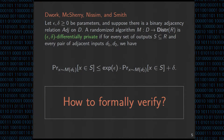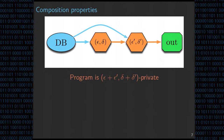Almost all formal verification approaches are based on this composition theorem. It's a basic property of differential privacy that makes it easier to think about DP both informally and formally. Suppose that I have two mechanisms: the first is epsilon-delta private and the second is epsilon-prime delta-prime private. I feed a private database into the first mechanism, get some output, and feed that output along with the database into the second mechanism. The composition property states that running these two mechanisms in sequence results in epsilon plus epsilon-prime and delta plus delta-prime privacy. Informally, the epsilons and deltas add up through sequential composition.